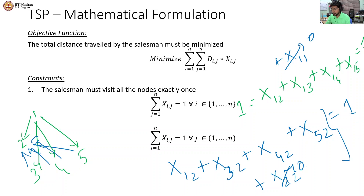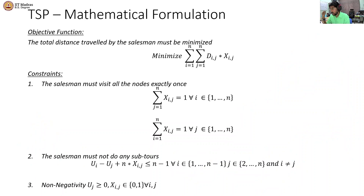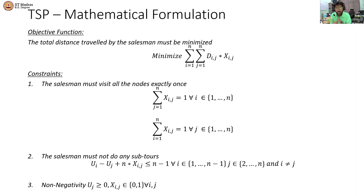So that is the first constraint, which is split into two: you enter each node only once and you leave each node only once. The second constraint is the sub-tour elimination constraint. I will explain this mathematical formulation in more detail shortly. The non-negativity constraint ensures that u(i) and u(j) — the auxiliary variables — are greater than 0, and x(i,j) is a binary variable that can either be 0 or 1 for any combination of i and j.